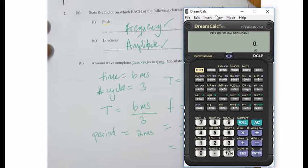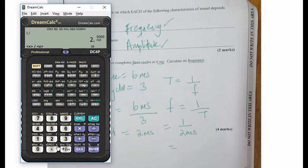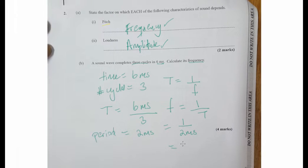Using our calculator: one divided by two milliseconds — and a millisecond is 10⁻³, so two milliseconds is 2 × 10⁻³ seconds. Dividing gives us 500, and the unit of frequency is Hertz. So the frequency is 500 Hz.